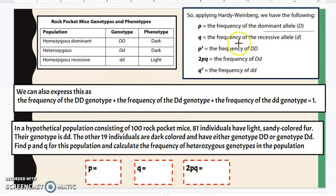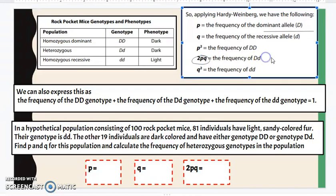One thing they are actually asking about, ultimately we want to find the frequency of the heterozygous. But first to do that, because the frequency includes P and Q, we have to calculate P and Q. So they tell us that 81 of the individuals out of the 100 are actually light phenotype. Those are the individuals that are homozygous recessive.